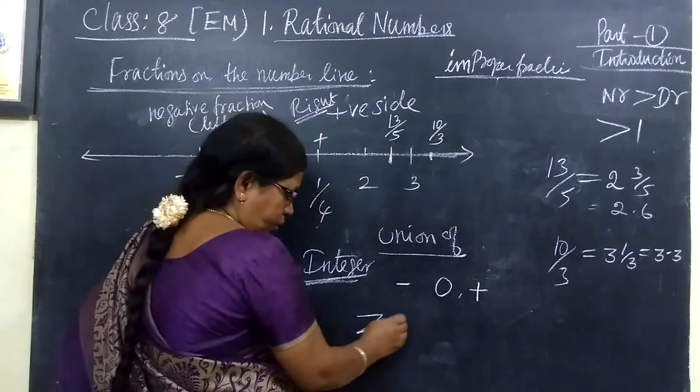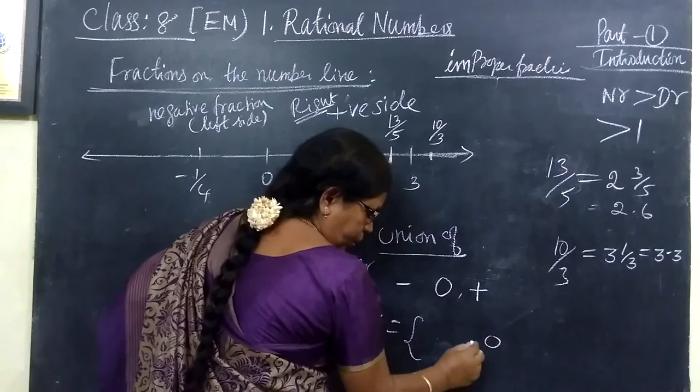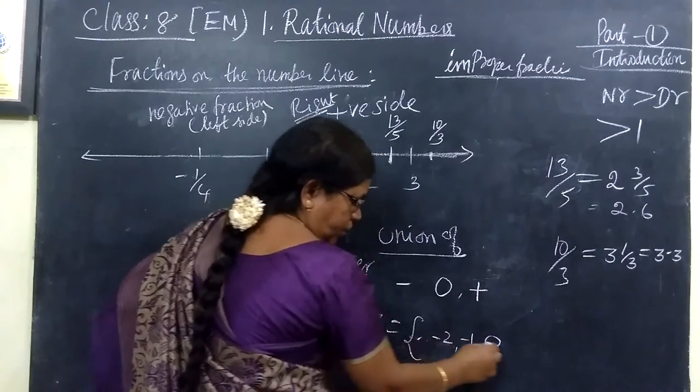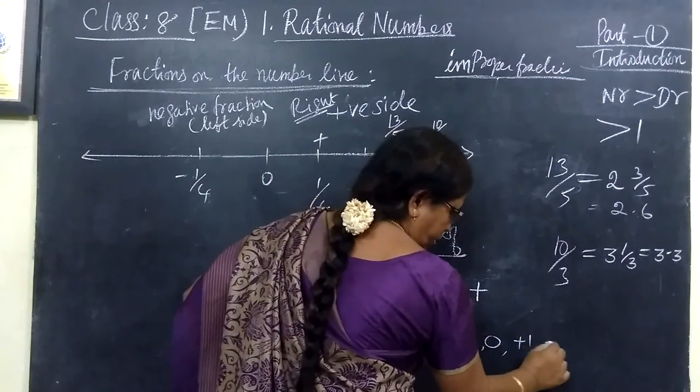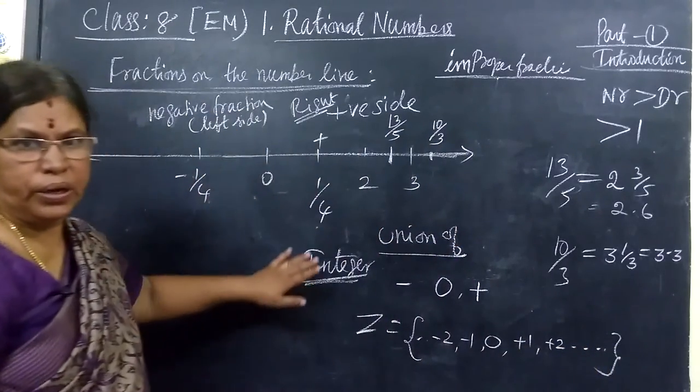Integer means union of 0 then positive number and negative number. Integer. So is it equal to. Here suppose 0. Here minus 1, minus 2 etc. Here plus 1 then plus 2 etc. So in this way we are marking integer.